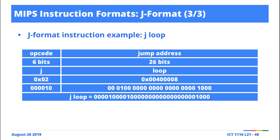The question is: if you have 'ADD dollar sign 8, dollar sign T0, dollar sign zero, dollar sign 5' — how does the assembler know that's the end? I said it's a new-line character, so when you add 'Load Immediate dollar sign 9, 6' on a new line, it knows that's a new instruction. Let's actually test it.